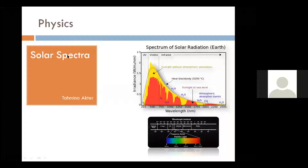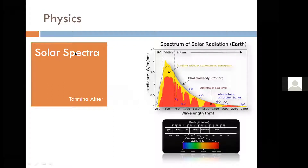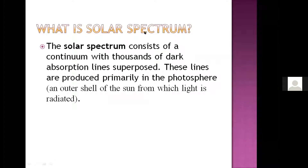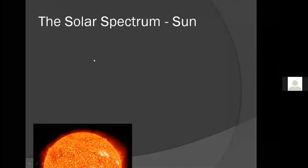Today I'm going to talk about the topic of solar spectrum. The solar spectrum consists of a continuum with thousands of dark absorption lines superposed. Absorption lines are seen as dark lines of reduced intensity on a continuous spectrum. These lines are produced primarily in the photosphere, the outer shell of the sun from which light is radiated.